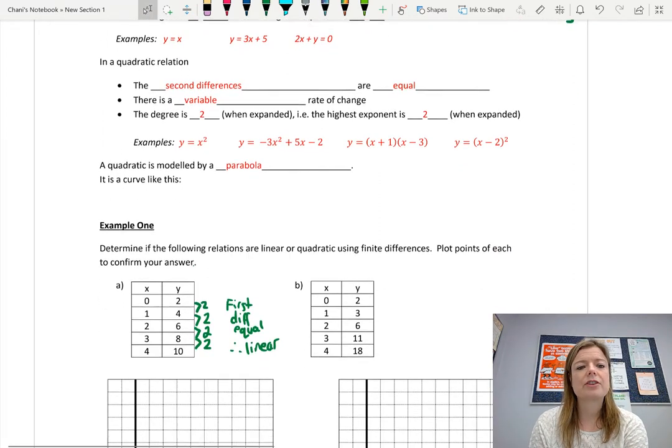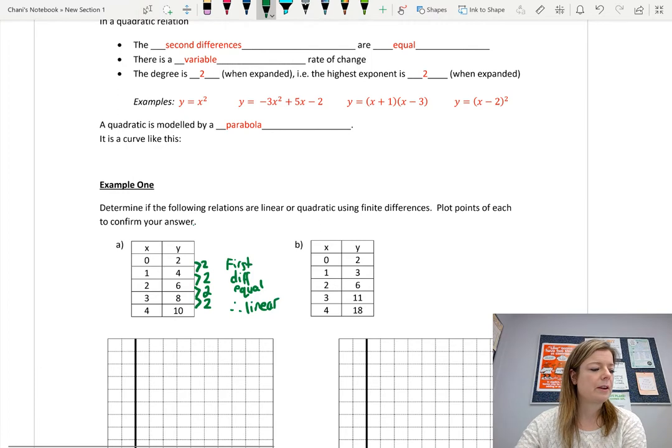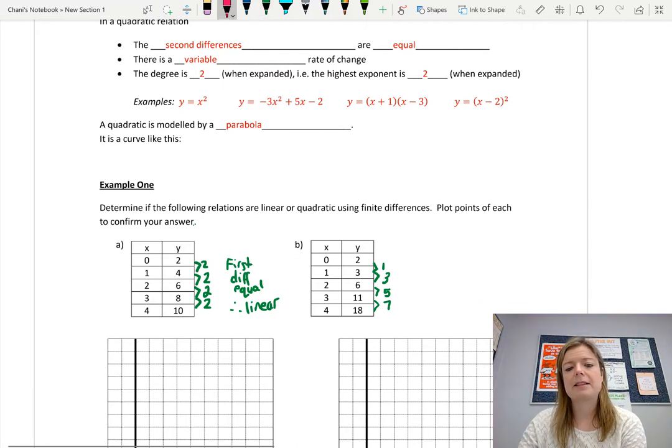Now, a quadratic relation, however, the second differences are equal. If you're taking a look at this table of values, notice that from 2 to 3, it goes up by 1. From 3 to 6, it goes up by 3. So right away, you can see the first differences aren't equal, so it's not linear. From 6 to 11, that goes up by 5. And from 11 to 18, that goes up by 7. So those are the first differences. Now the second differences means to find the differences of those. So from 1 to 3 goes up 2. From 3 to 5 goes up by 2. And from 5 to 7 goes up by 2.